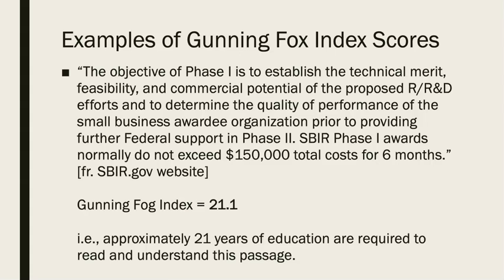Let's look at two passages. The first is taken from a small business industrial research government website, and it explains how to apply for a grant. Its Gunning Fog Index comes in at 21.1 — quite high. That tells us approximately 21 years of education are required to read and understand this passage. Perhaps it's no accident that most applicants for SBIR grants are college educated at a higher level — master's or PhD level.